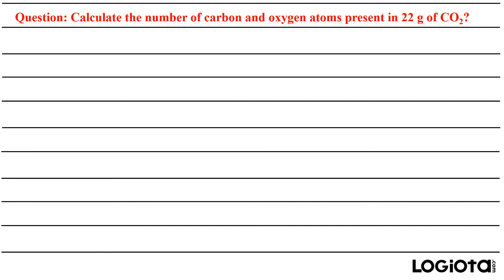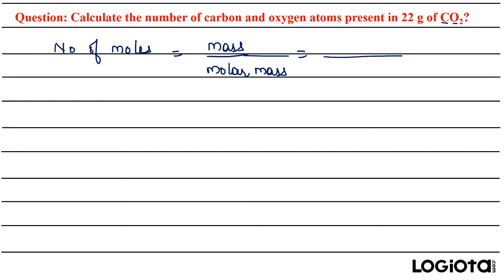First of all, we need to calculate the number of moles. The formula is mass divided by molar mass. The molar mass of CO₂ is not given, but you can calculate it by adding up the atomic masses of the two elements. That will be 12 plus twice of 16, which comes out to be 44. The mass given is 22, so the number of moles is 0.5.